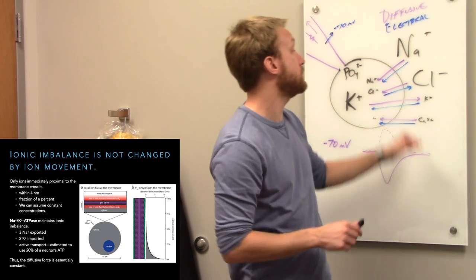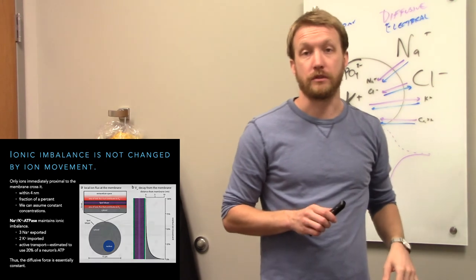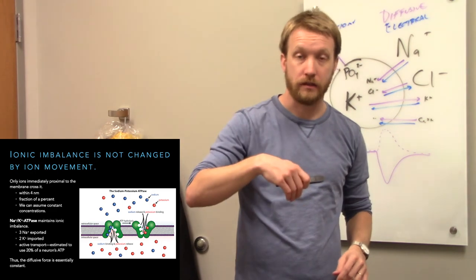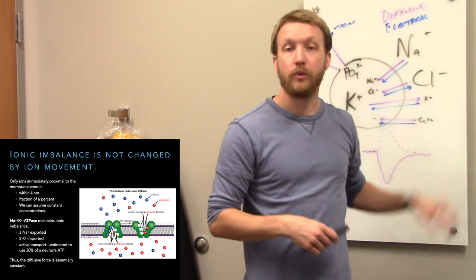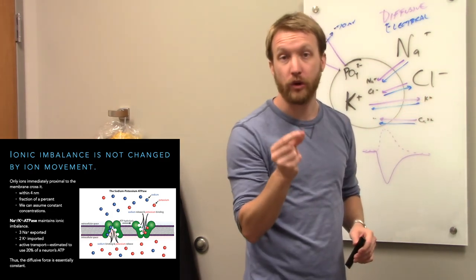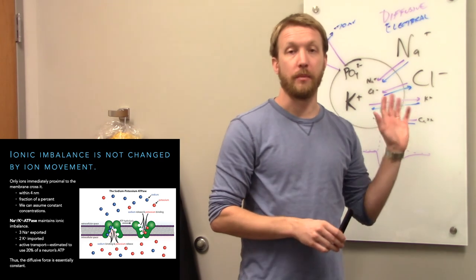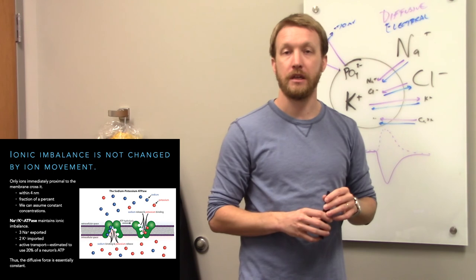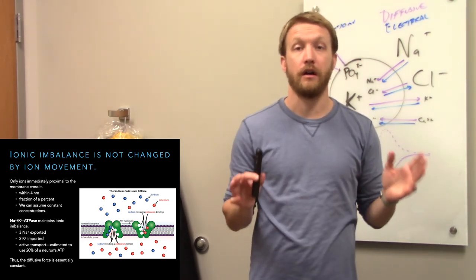We're moving a fraction of a percent of ions and not getting big changes in ion concentrations, so we should always think there's a lot of sodium outside and very little inside — that diffusive force remains constant. The other reason the diffusive force stays constant is the sodium-potassium pump. As sodium flows in and potassium flows out down their concentration gradients, the pump reestablishes the ion imbalance. Over time those fractions of a percent would add up, but the pump prevents that, spending about 20% of a neuron's ATP on this enzyme alone.